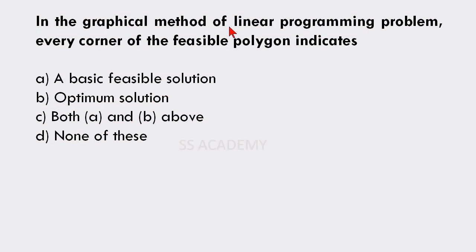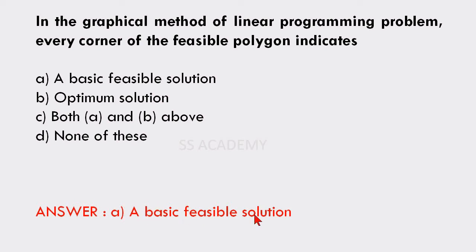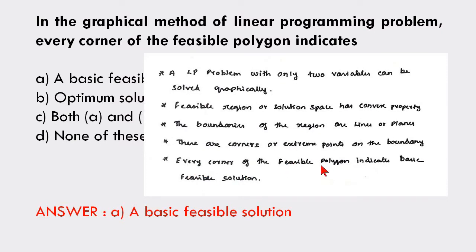Next question: In the graphical method of linear programming, every corner point of the feasible polygon indicates — basic feasible solution, optimum solution, both A and B, or none? The answer is option A: basic feasible solution. Every corner point gives the basic feasible solution; by substituting those corner point values into the objective function we then find the exact optimum solution.